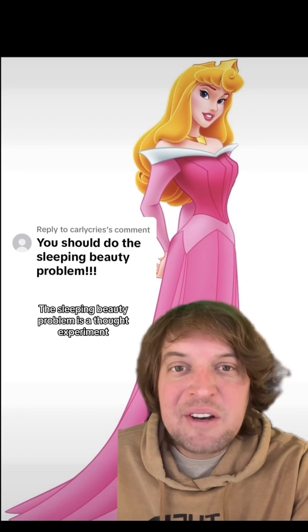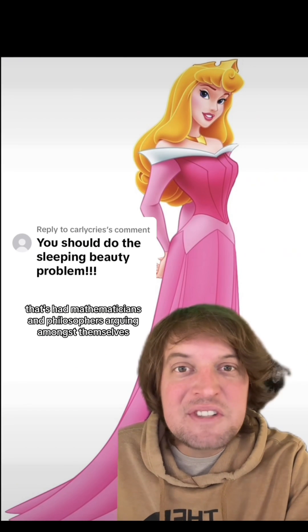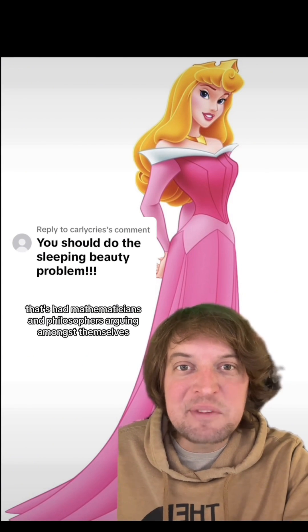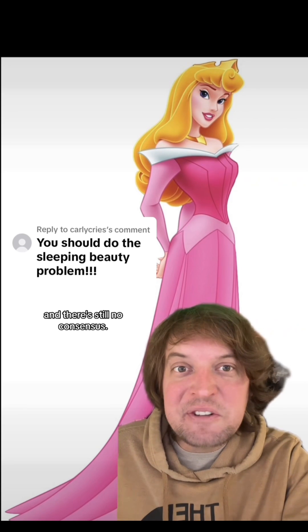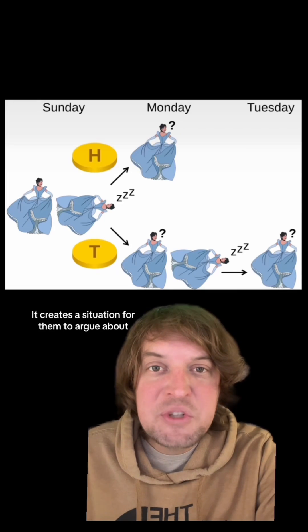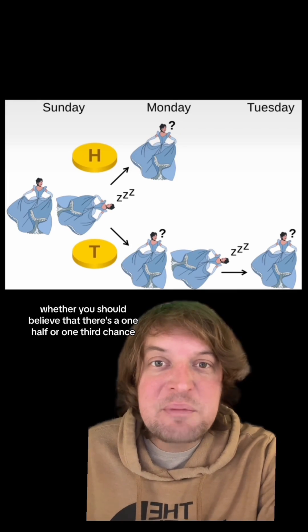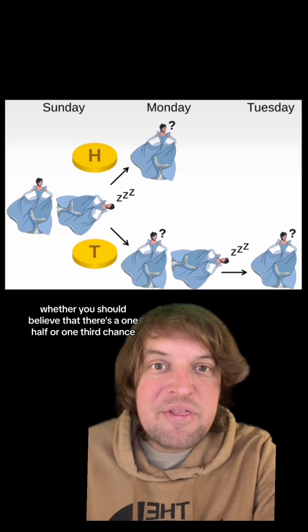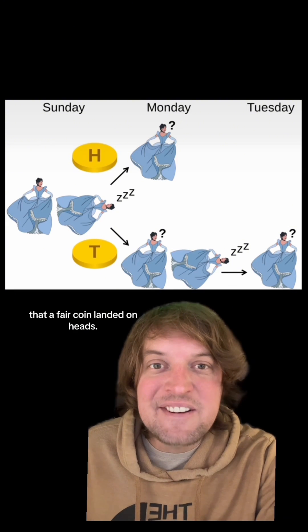The Sleeping Beauty problem is a thought experiment that's had mathematicians and philosophers arguing amongst themselves for over two decades, and there's still no consensus. It creates a situation for them to argue about whether you should believe that there's a one-half or one-third chance that a fair coin landed on heads.